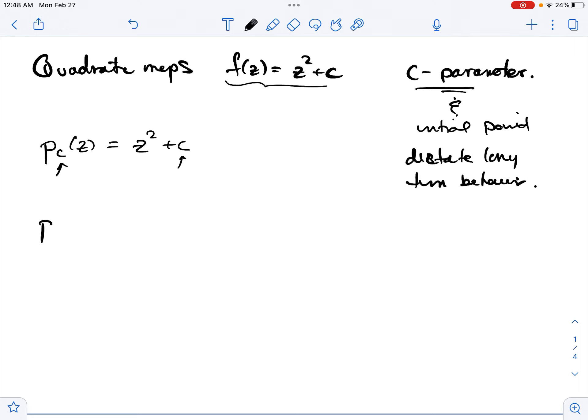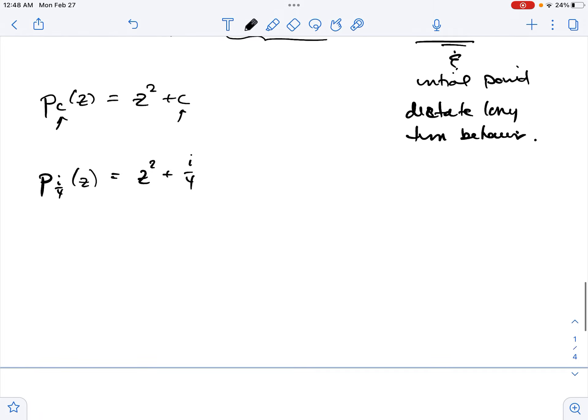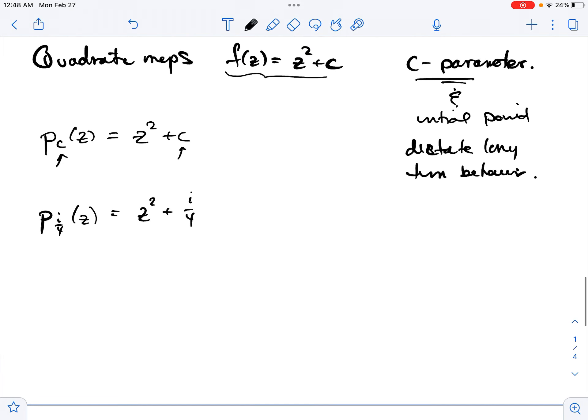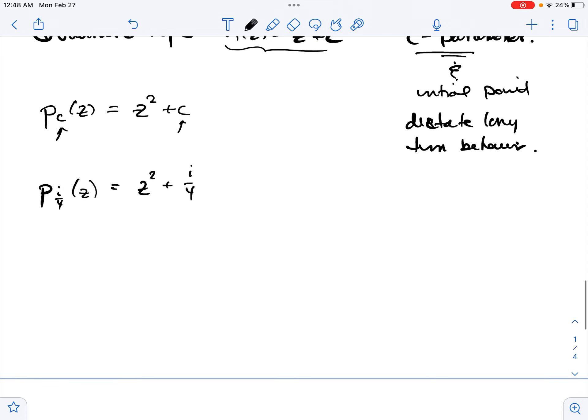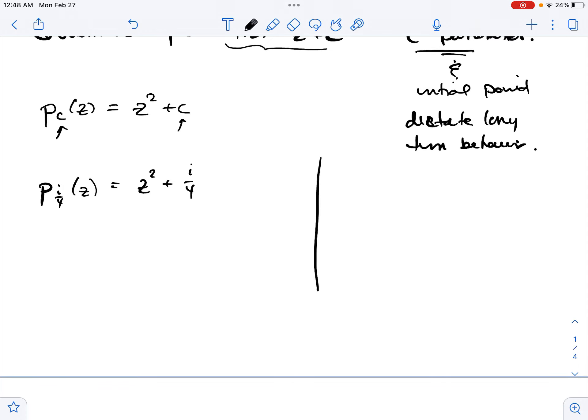So if you look at the map P_{i/4}(z), which is equal to z squared plus i/4, we can look at a couple of different iterates of this function. And I'm going to try to draw a picture. This picture corresponds to a particular image that we see in Roeder's notes. And I'm going to reproduce this in code for you guys. I welcome you to look at it yourself.